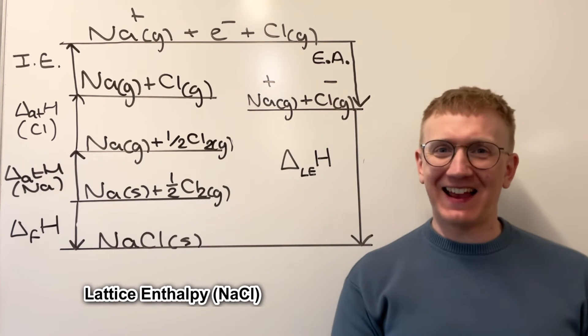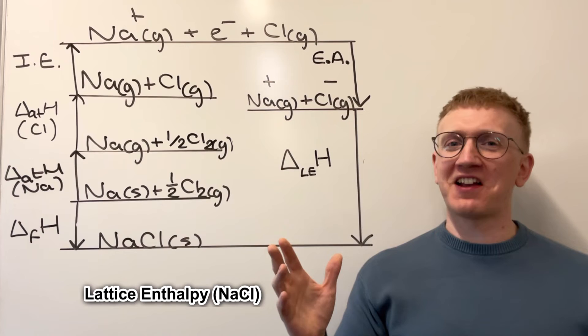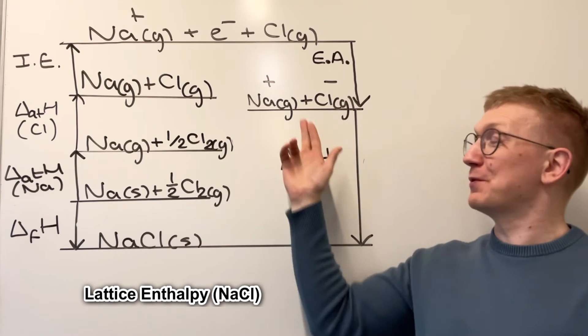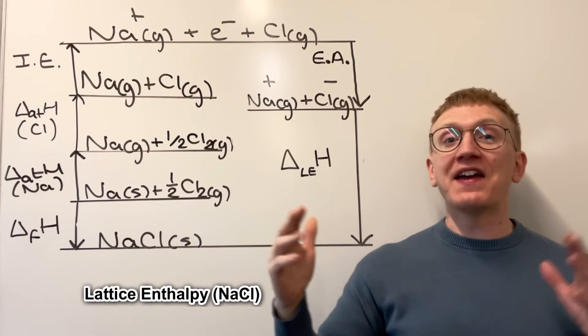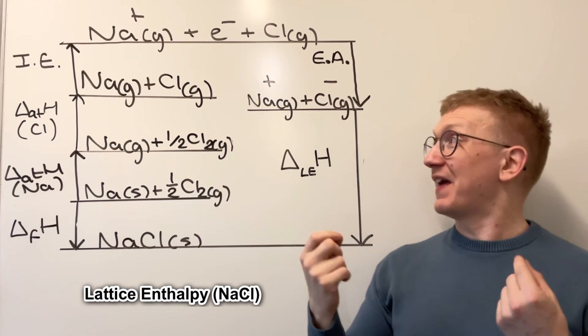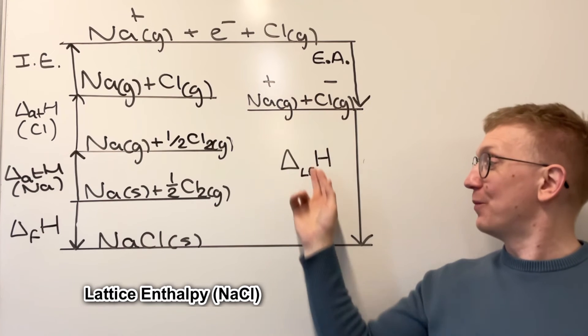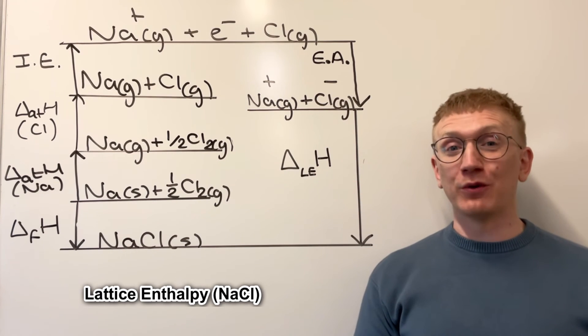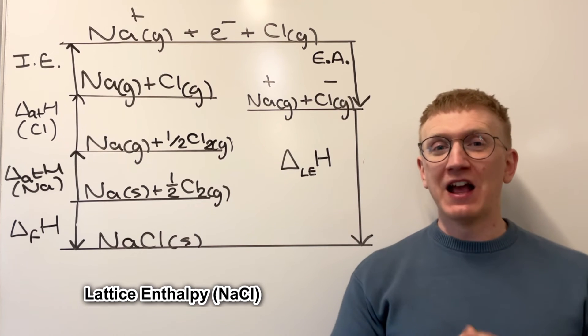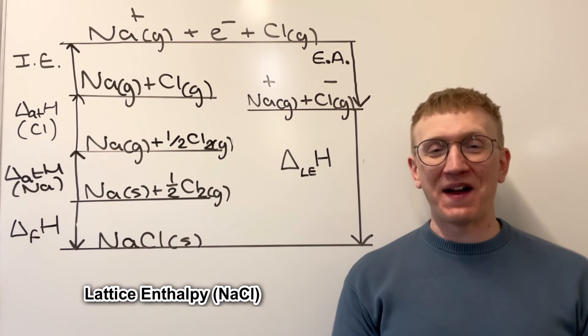Finally here, we've got the lattice enthalpy. Now, hopefully this one is kind of obvious. Why this one is going to be very exothermic is because we've got these two ions here, and they are going to form a bond. And when they come together, they give out loads of energy in forming that giant ionic lattice. That's why these lattice enthalpy values are very exothermic. There's loads of energy given out on that bond formation.